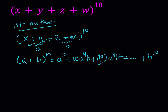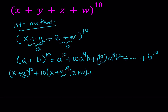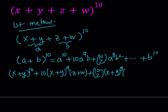What I want to do is back-substitute — replace a with x plus y. So it looks like x plus y to the 10th power, and then 10 times x plus y to the 9th power multiplied by b, which is z plus w, and then with 10 choose 2 it looks like x plus y to the 8th power multiplied by z plus w squared, and at the end we get z plus w to the power 10.